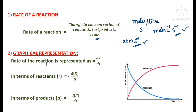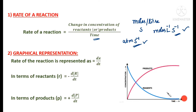Now let us see the graphical representation for the rate of a reaction. The rate is represented as dx/dt — the change in concentration with change in time. We draw a graph between concentration and time. The concentration of the reactant decreases as time passes, while the concentration of the product increases as time passes — they are vice versa.